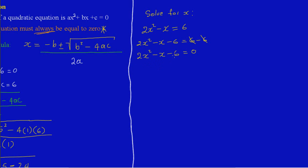This is what we want. So now let's quickly identify our a, b, and c before we get into it. A is equal to 2. B is equal to the coefficient — remember we would have a 1 in front of that — so b is really negative 1. And c is equal to the constant, which is negative 6.